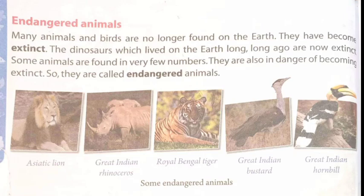The dinosaurs which lived on the earth long, long ago are now extinct. Some animals are found in very few numbers — they are also in danger of becoming extinct, so they are called endangered animals.